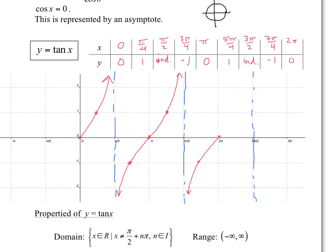This is back to the first quadrant — 0 to pi over 2 corresponds to 2 pi to 5 pi over 2, which is the first quadrant again, and it goes to positive infinity. Notice that this pattern would continue on both sides. And that's how you sketch the tangent graph — you could sketch another cycle over here as well.